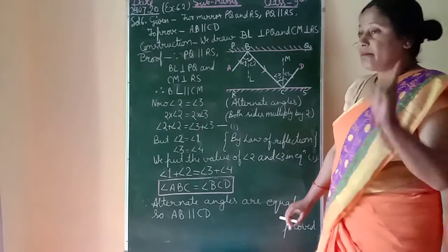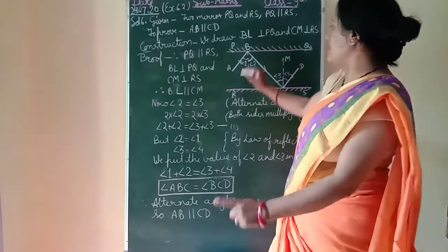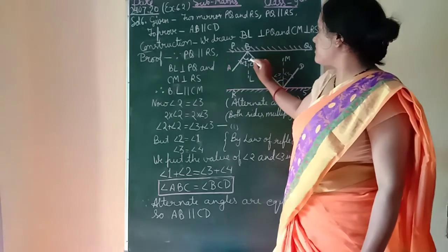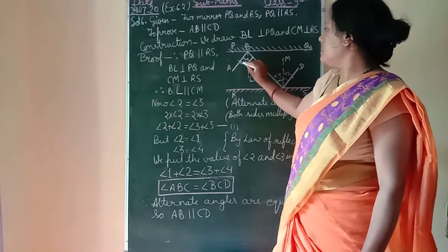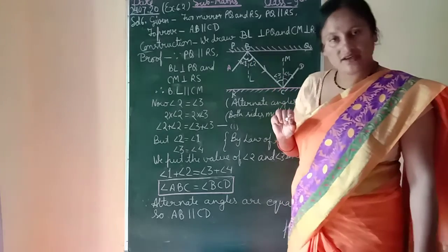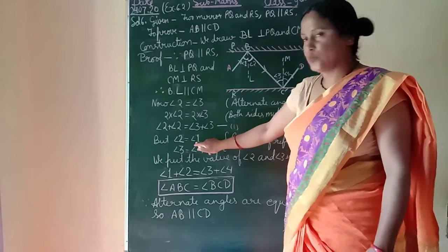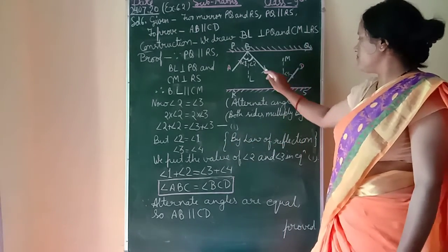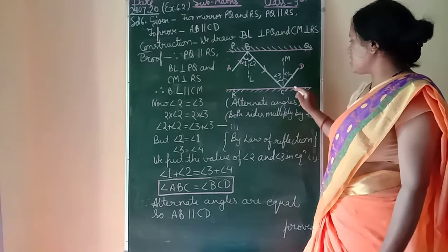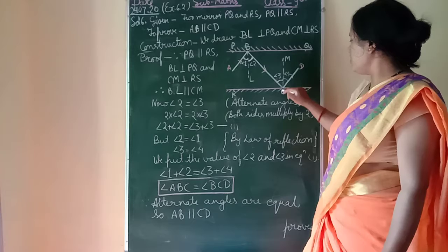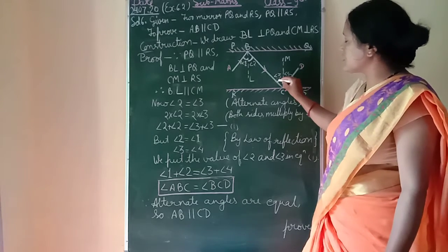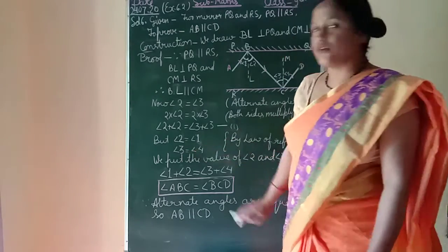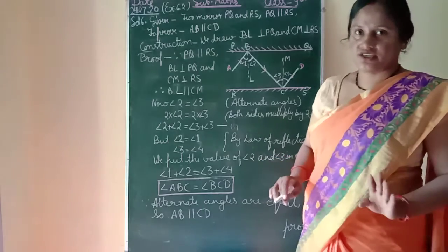By the law of reflection at mirror PQ: the angle of incidence equals the angle of reflection, so angle 1 equals angle 2. Similarly, at mirror RS: the incident ray BC makes angle 3 and the reflected ray CD makes angle 4, so angle 3 equals angle 4.